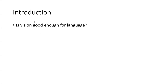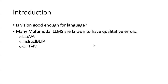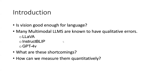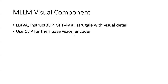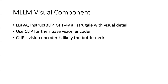The main concern of this paper is: is vision good enough for language models? Many multimodal LLMs have really obvious qualitative errors. What exactly are those shortcomings, and is there any method to measure them? Those popular multimodal LLMs all struggle with visual details, and they all use CLIP for their base vision encoder. This paper points out that the CLIP vision encoder might be the bottleneck of this problem.